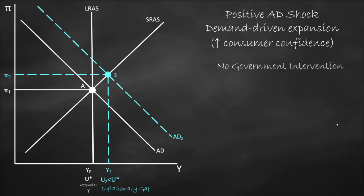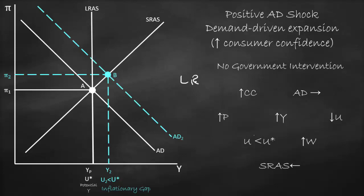Let's assume there is no government intervention — the central bank and government will do nothing, and we leave everything to the market to correct itself. This will happen in the long run. Because of higher consumer confidence, aggregate demand shifts right as consumption is higher, resulting in higher inflation and higher prices. Higher prices mean higher output and lower unemployment. If our unemployment is below the NAIRU — the natural rate of unemployment — wages will rise. If wages increase, the cost of production will be higher, so producers will be reluctant to produce more. Therefore, the short-run aggregate supply curve will shift to the left.